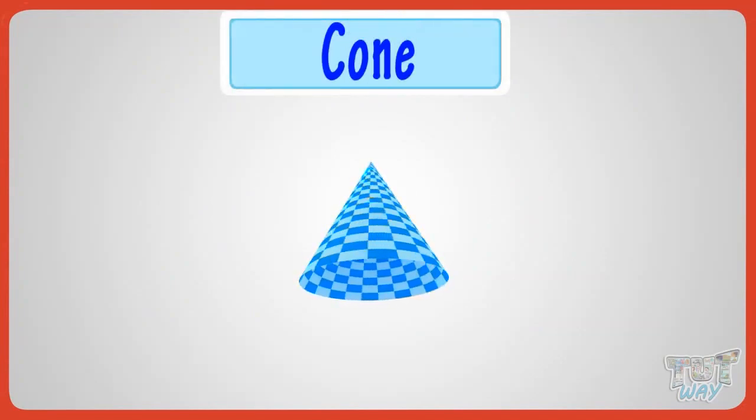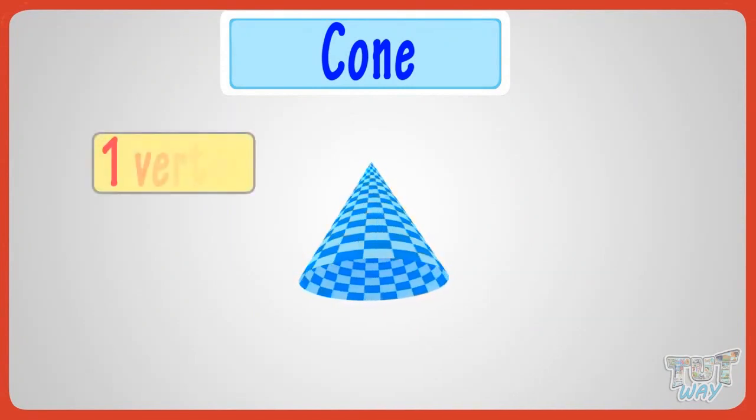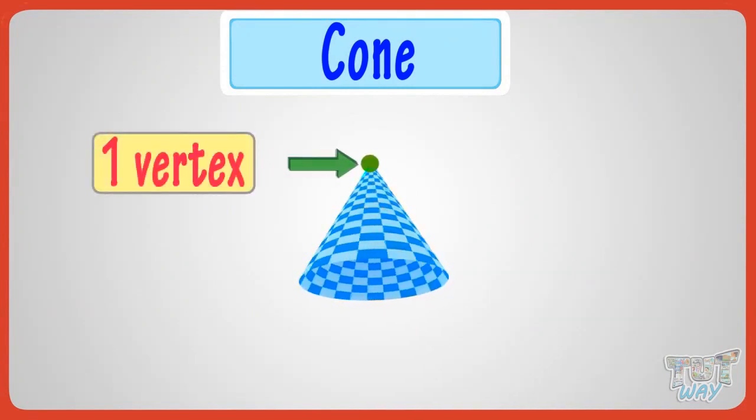Let's first start with a cone. This is a cone. It has only one vertex, which is the tip of the cone.